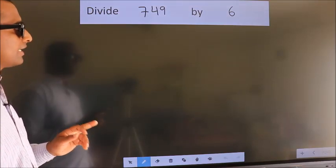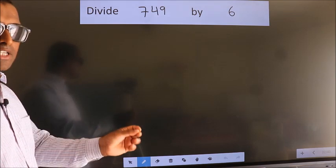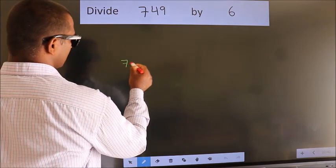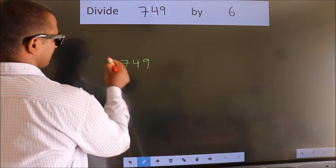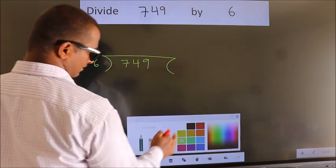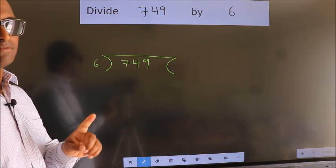Divide 749 by 6. To do this division, we should frame it in this way. 749 here, 6 here. This is your step 1.